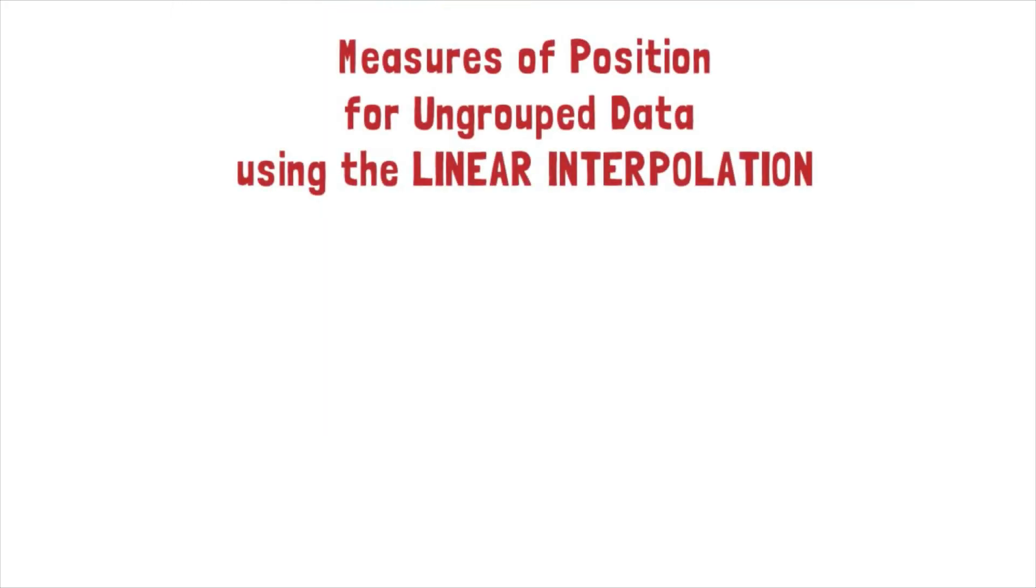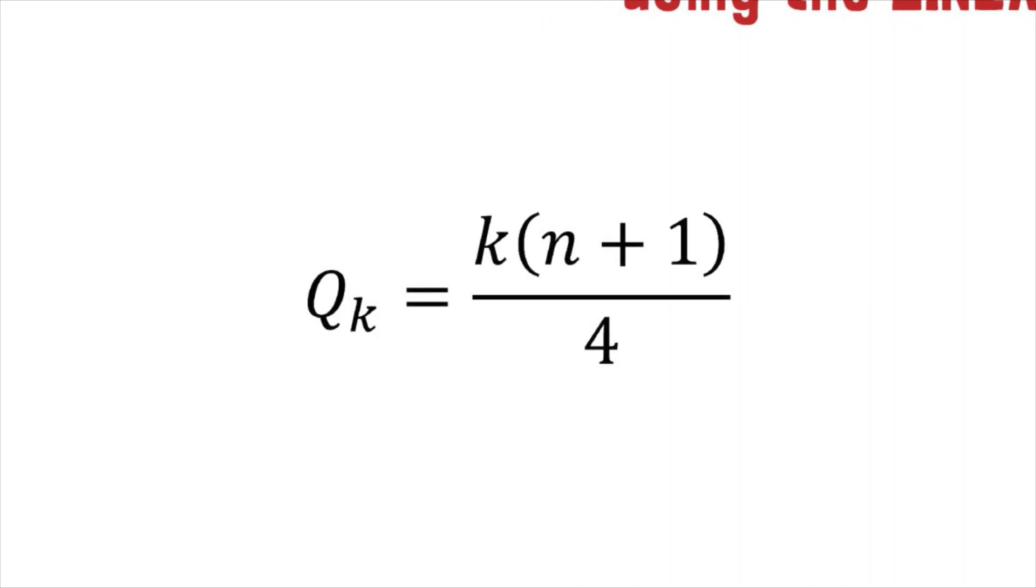I'll discuss how to solve measures of position using the linear interpolation method. These are the formulas we'll use for our topic today. If the position we're locating is under quartiles, we will use the formula Q sub k equals k times the quantity n plus 1 divided by 4.